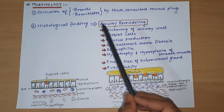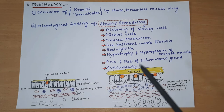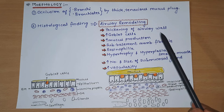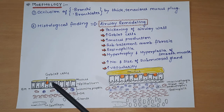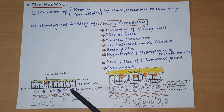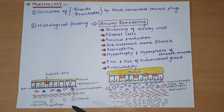Second, histologically we see airway remodeling - the normal airway is transformed into a remodeled airway. In a normal airway: there are normal goblet cells, normal amount of mucus, epithelium, lamina propria with some neutrophils and basophils, blood vessels, smooth muscle, glands, and cartilage.